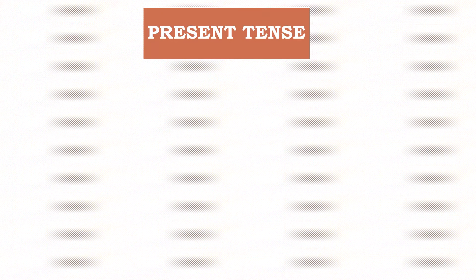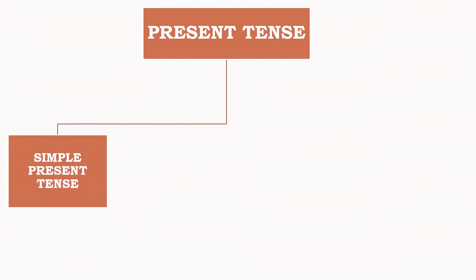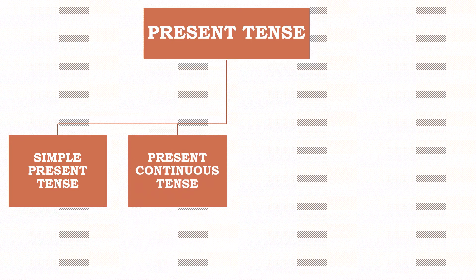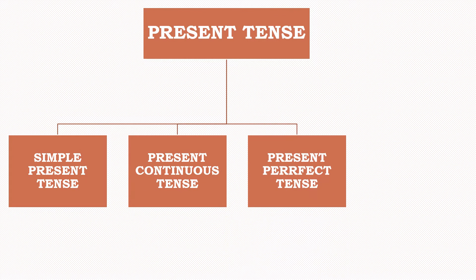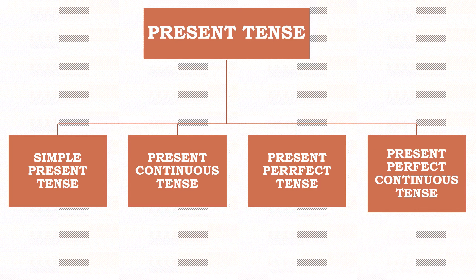Now we will move on to the types of present tense. There are four types of present tense: simple present tense, present continuous tense, present perfect tense, and present perfect continuous tense. I will talk about these four types of tenses in detail in another video. You can search them by their name on my YouTube channel.